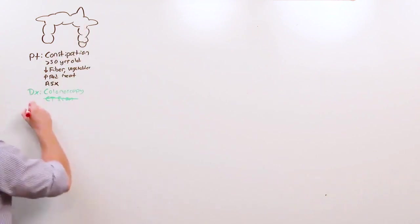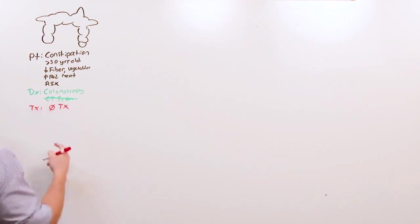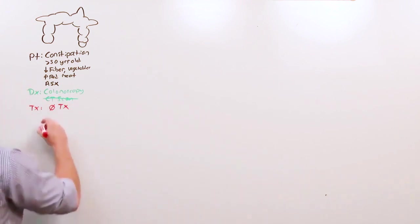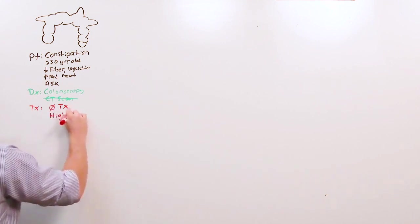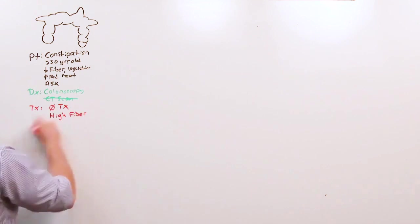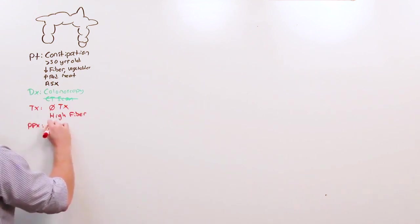Because they are asymptomatic there's no treatment. You just want to prevent them progressing into complications so you put them on a high fiber diet. You'd want to prophylax this by maintaining a diet rich in fruits and vegetables.